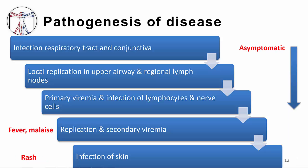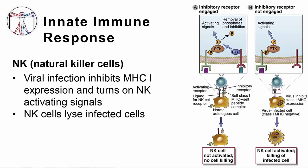Most of the initial viral infection is asymptomatic, and it isn't until the secondary viremia that the patient becomes symptomatic. VZV has evolved to evade the immune system by down-regulating the expression of MHC class 1 molecules on infected cells, limiting the effects of CD8 T cells that recognize antigens presented on MHC class 1 molecules. However, this evolution also allows NK cells to respond to the primary viral infection.